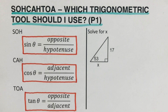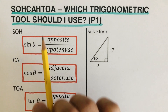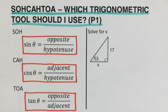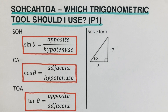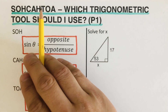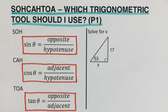Most students would ask: when do I use SOH? When do I use CAH? When do I use TOA? The answer is it all depends on whatever's given in the triangle. We need to label the sides of the triangle as either opposite, adjacent, or hypotenuse. From there, we'll know which of the three — SOH, CAH, or TOA — should be used to solve for the missing side.